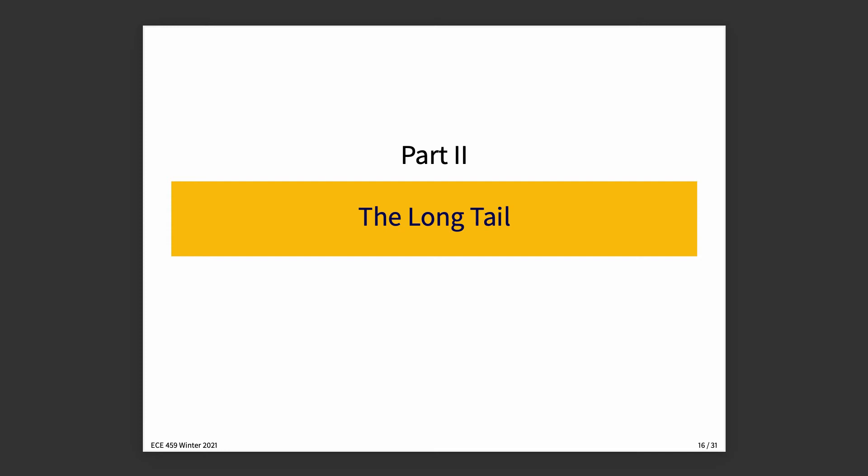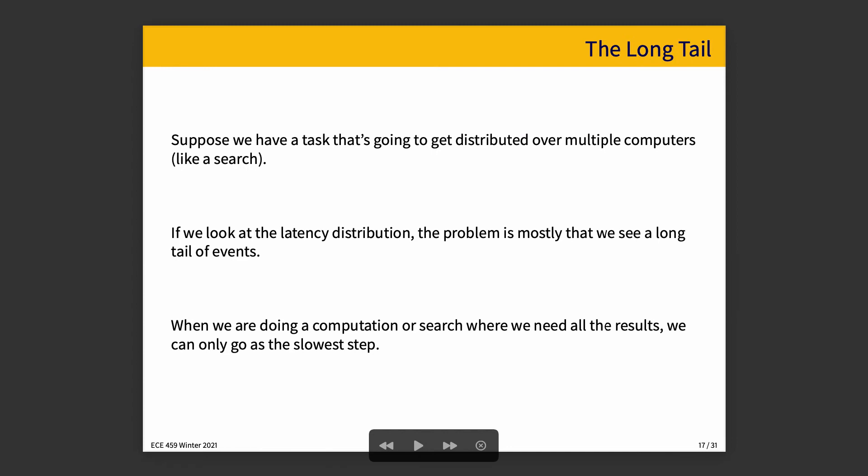Next kind of lie I want to tell you about is the long tail. The other type of lie that sampling can really hide is the outliers problem, or the long tail. Suppose we have a task that's going to get distributed over many computers. Think of Google Search as this kind of thing. That's going to be a distributed problem, so you will have different response times from different devices. However, if you look at the latency distribution, it is likely that you see a long tail of events, which is that there are a lot of cases where it's done quickly, but occasional cases where it's taking a lot longer than normal, and those ones where it takes a lot longer can really affect your average.